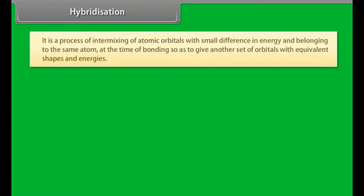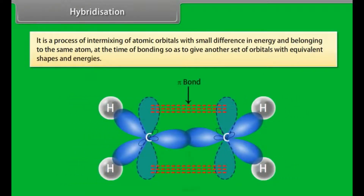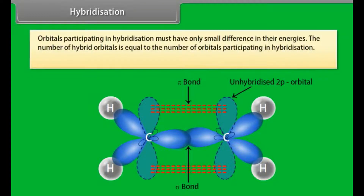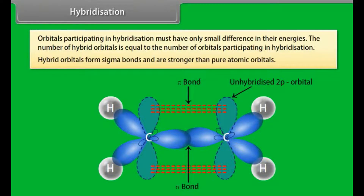Hybridization is a process of intermixing of atomic orbitals with small difference in energy and belonging to the same atom at the time of bonding, so as to give another set of orbitals with equivalent shapes and energies. Orbitals participating in hybridization must have only small differences in energy. The number of hybrid orbitals equals the number of orbitals participating in hybridization. Hybrid orbitals form sigma bonds and are stronger than pure atomic orbitals.